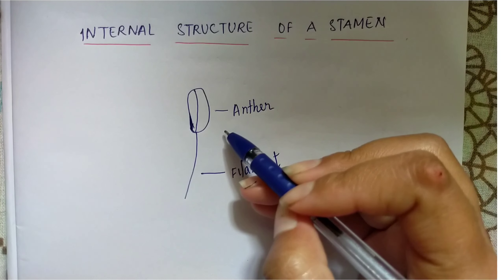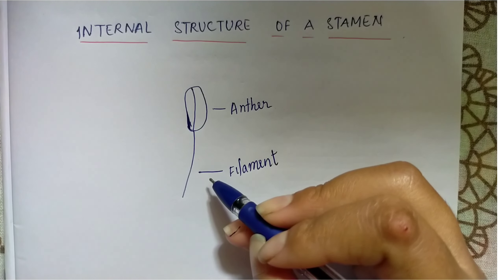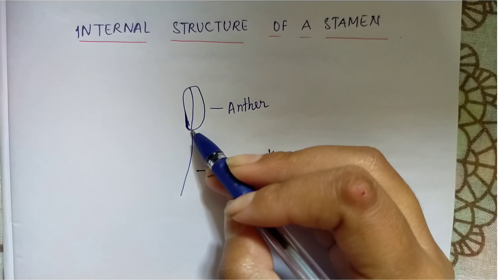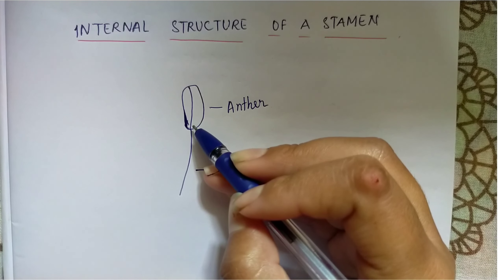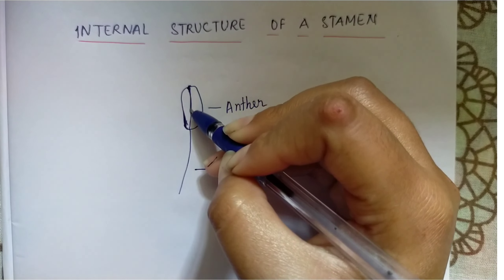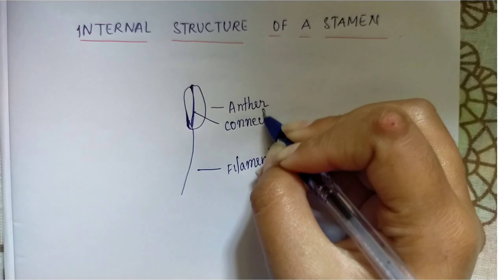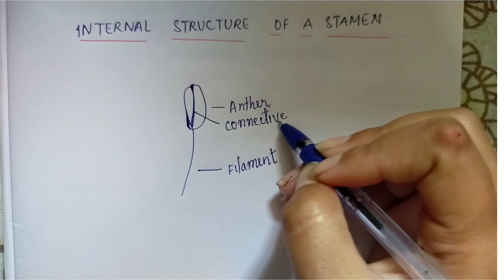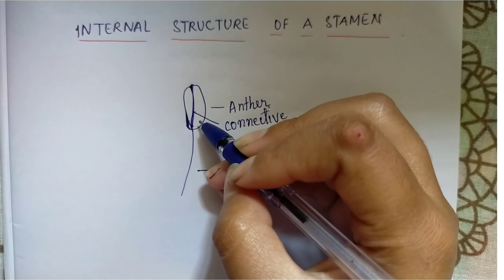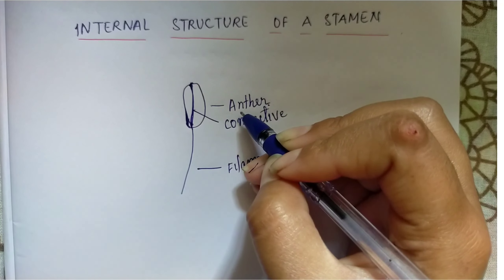Anther is a lobe-like structure and the filament is a thread-like structure. This anther here is a bilobe anther which stays connected to each other by a sterile tissue known as the connective tissue. This connective tissue does not take part in the process of reproduction; it helps to connect the two lobes of the anther.